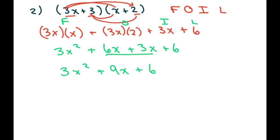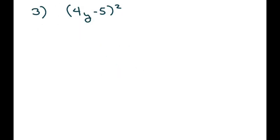You could factor out a 3 if you wanted, in this case, but that wouldn't be in standard form. And this one, this basically is 4y minus 5 times 4y minus 5. Now you could do the same thing, foil that out.